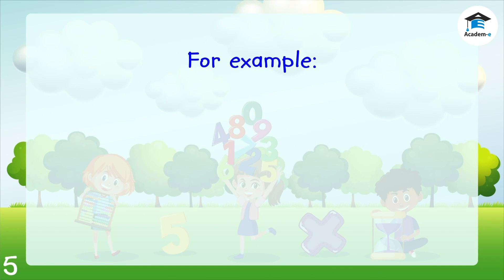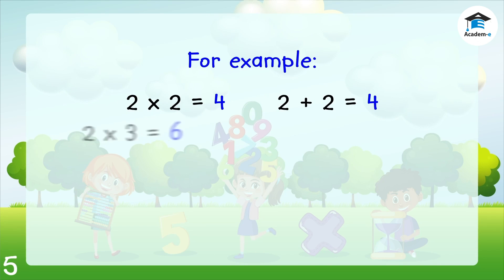For example, 2 times 2 equals 4. Let's add 2 by itself: 2 plus 2 equals 4. Next example: 2 times 3 equals 6. Let's add 3 by itself: 3 plus 3 equals 6.